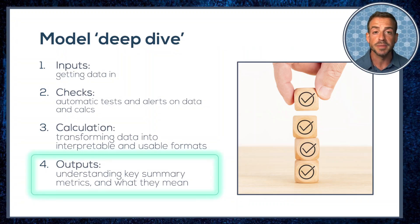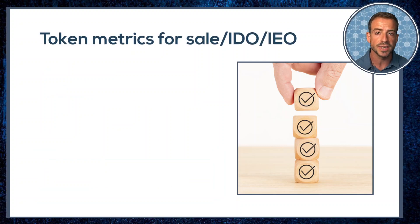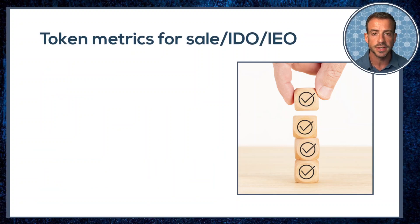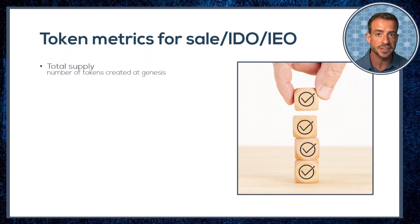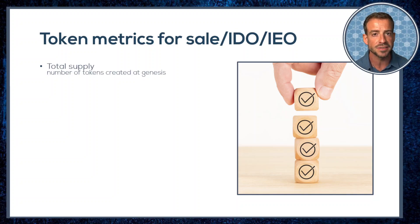These include the famous token metrics that you frequently see being discussed online and which are highlighted in investor materials. In the context of an IDO and IEO, these metrics are the total supply — the total number of tokens being created at Genesis — and in the most common designs, this is also the maximum number of tokens that will ever exist.